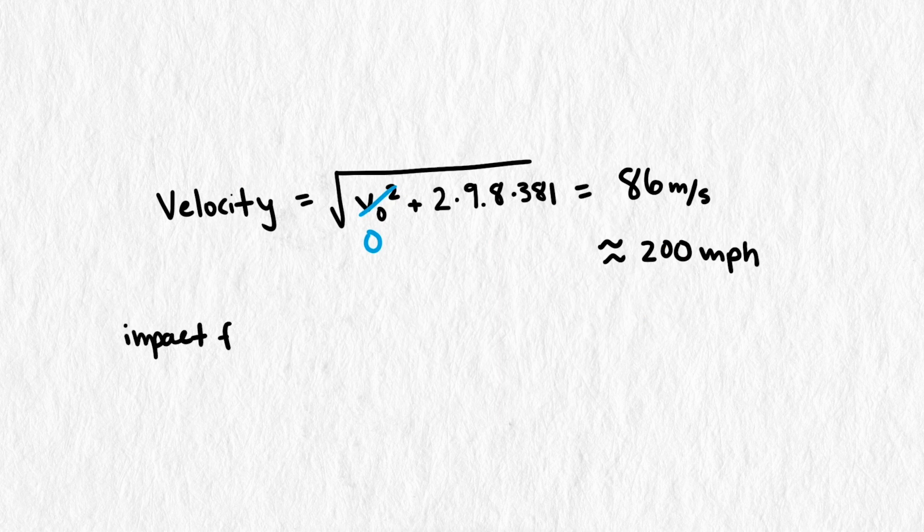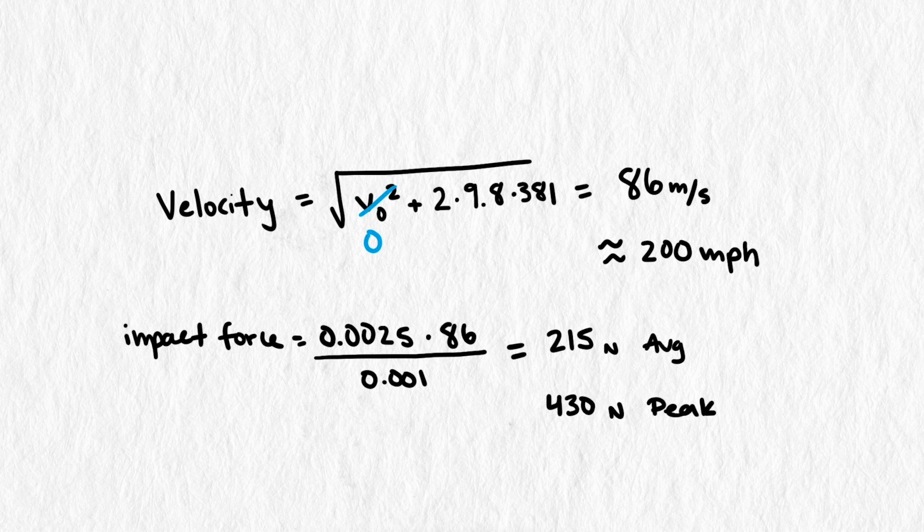To get the impact force, we multiply that by its mass, divide by contact time, to get 250 newtons on average, and 430 newtons at its peak. Still not enough to kill you with blunt force.